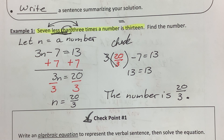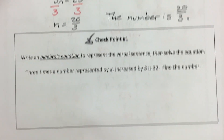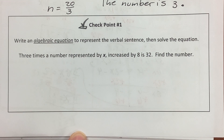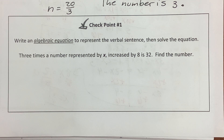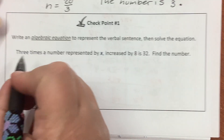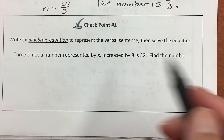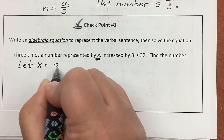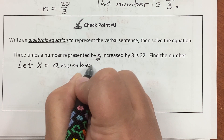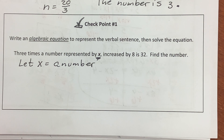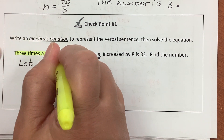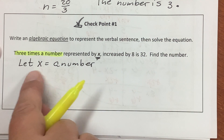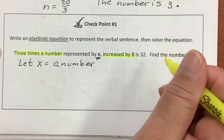When the problem tells you to write an algebraic equation or solve algebraically, you have to do that — you cannot guess and check. You have to show the algebraic equation. Here, 3 times the number is represented by x, so my let statement is: let x equal a number. 'Increased by' means add. So 3 times the number is 3x. Increased by 8 is 32.